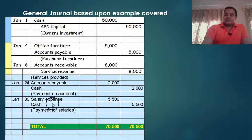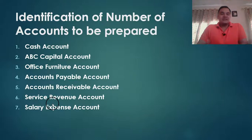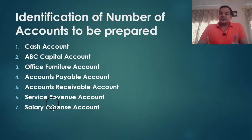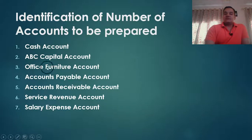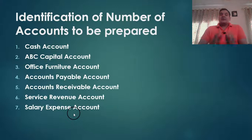Always remember, we do not make double or triple accounts with a single name. Only one name and one account will be opened. To identify the number of accounts to be prepared, just count the unique names — if it is repeating, no need to open another account. So accounts are: cash, ABC capital, office furniture, accounts payable, accounts receivable, service revenue, and salary expense — total seven accounts.